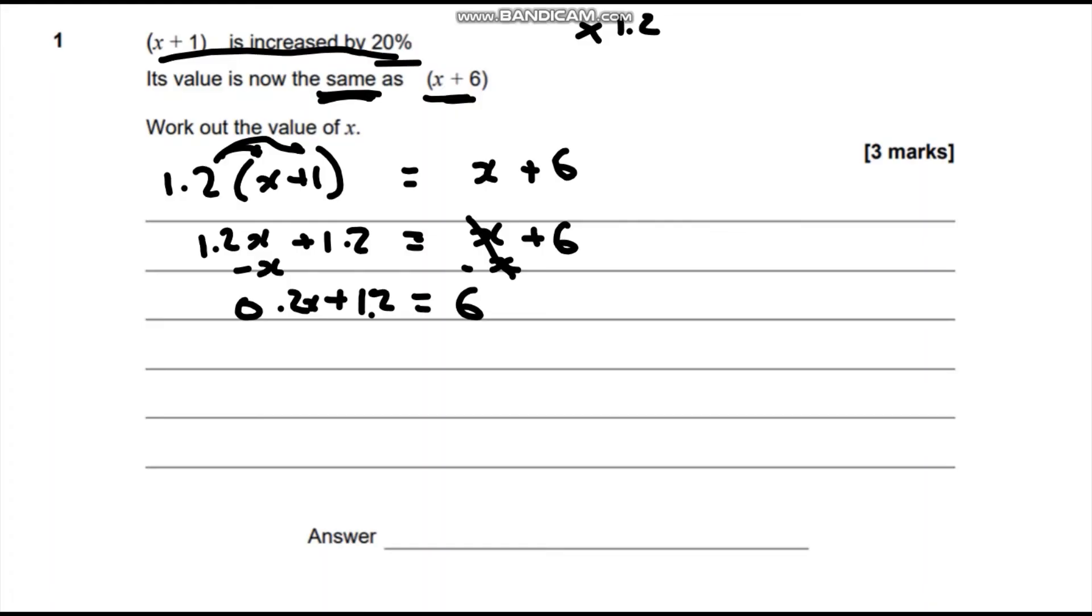Now we're going to subtract 1.2 from both sides. 6 take away 1.2 would be 4.8. Those cancel out. So 0.2x equals 4.8.